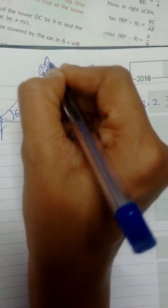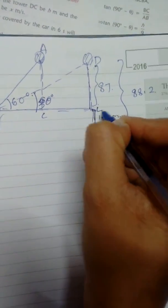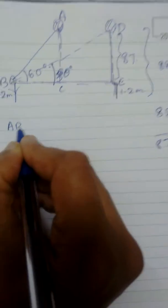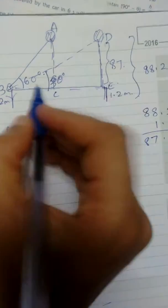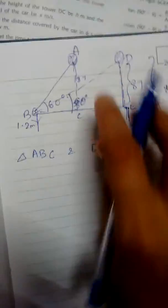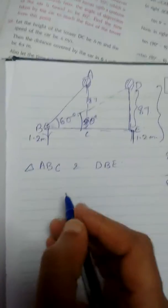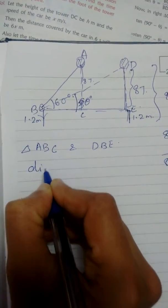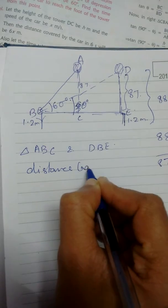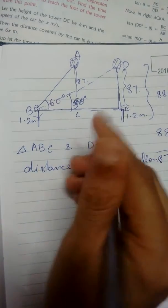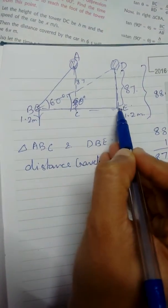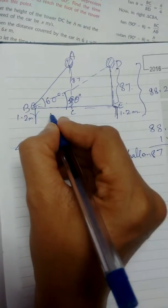Now we will name the triangles: A, B, C and D, B, E. We have two triangles. The height of 87 meters is the vertical distance from the eye level to the balloon. Now we will find the distance travelled by the balloon, which is CE.